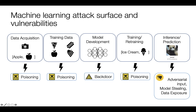At testing and prediction time we can add adversarial inputs. We can also steal data — for example, reverse engineering to check what faces were used in a training model is possible through certain facial recognition algorithms. This is obviously a problem if you're trying to preserve the privacy of the people whose images were used for training.